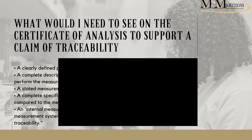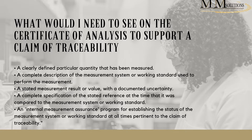So if you were to buy a CRM, what do you need to look out for to support the claim of traceability? The main difference between the two is metrological traceability with respect to CRM. What you need to look out for is a clearly defined particular quantity that has been measured, a complete description of the measurement system or working standard used to perform the measurement, a stated measurement result or value with a documented uncertainty, a complete specification of the stated reference at the time it was compared to the measurement system or working standard, and an internal measurement assurance program for establishing the status of the measurement system or working standard at all times pertaining to the claim of traceability. Remember, you need an unbroken chain when it comes to traceability, so you need to see how that traceability has been transferred through.